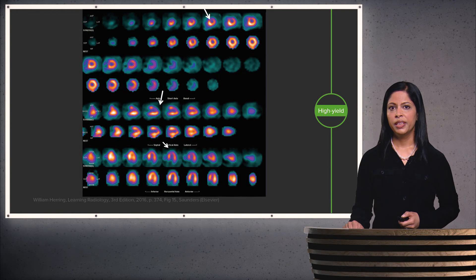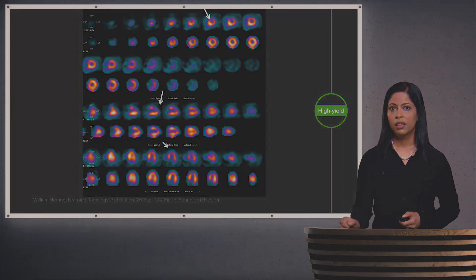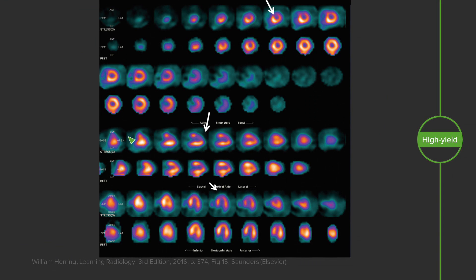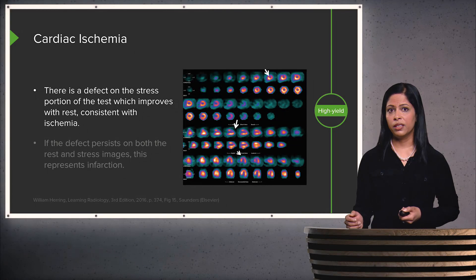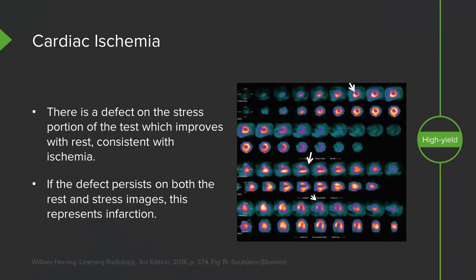Let's take a look at this scan and see how it differs from the prior one. Looking at the horizontal long axis row, the top images are the stress images and the bottom are the rest images. In a normal heart, the stress and rest images should have normal flow to all aspects of the heart. However, on these stress images, you can see an area of photopenia which isn't present on the rest images. Under stress, this heart is losing blood flow to that portion — this is called a defect on the stress images. It improves on rest, which is consistent with ischemia. If the defect persists on both rest and stress images, that represents an infarction.